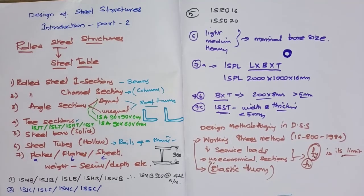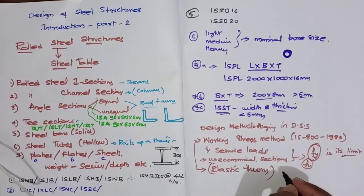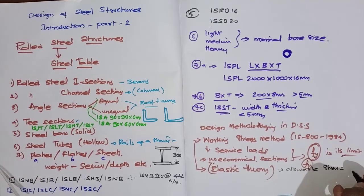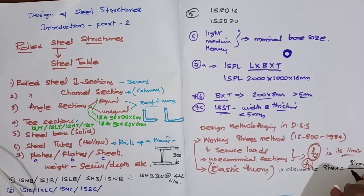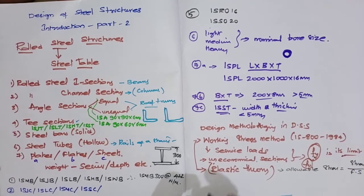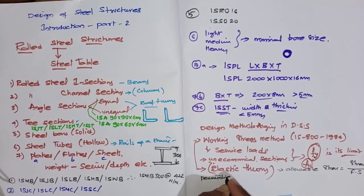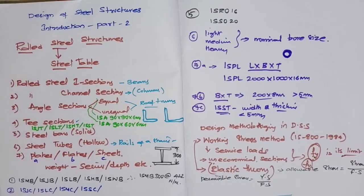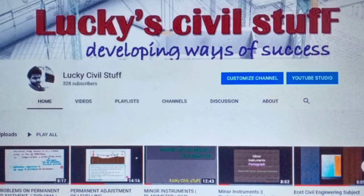In the working stress method, allowable stress equals the ultimate stress divided by a factor of safety, while permissible stress equals yield stress divided by a factor of safety. In the next video, we will discuss the main concept of the limit state method of design as per IS 800:2007. Thank you for watching — please subscribe, like, share, and comment.